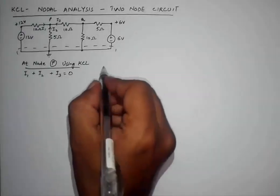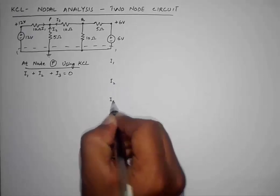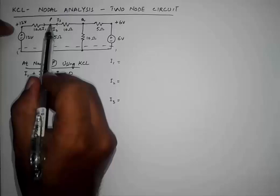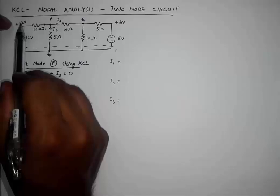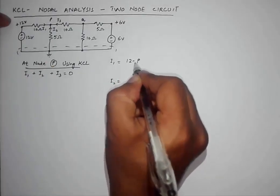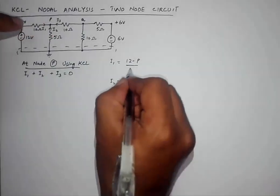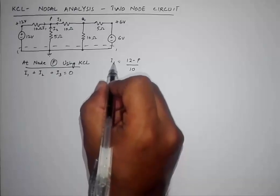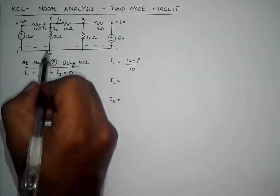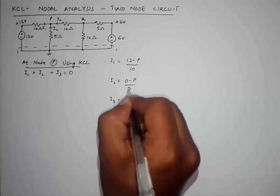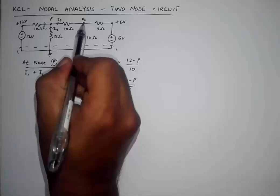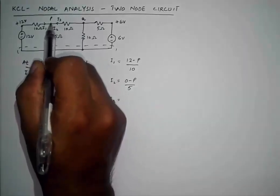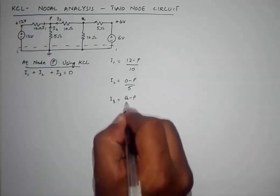Now I am going to find the value of these currents using Ohm's law: I = ΔV / R. Current I1 flows from 12V to node P, so I1 = (12 − P) / 10 Ω. For the next element, I2 = (0 − P) / 5 Ω. For I3, the voltage on one side is Q and on the other is P, and I3 flows from Q to P, so I3 = (Q − P) / 10 Ω.